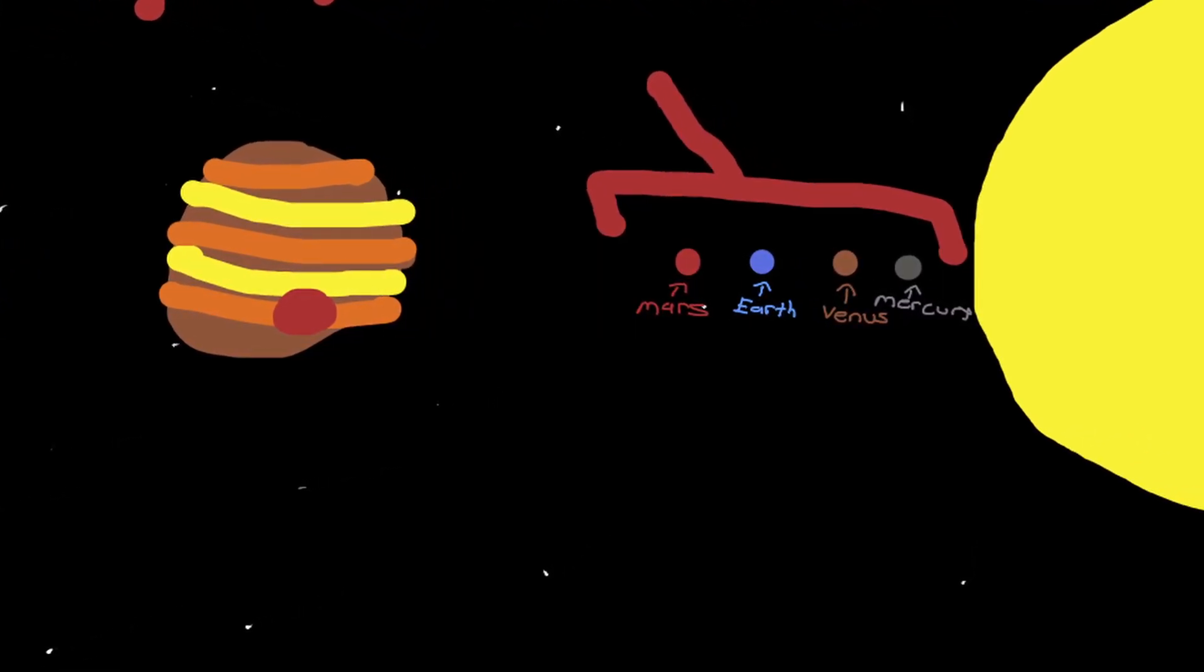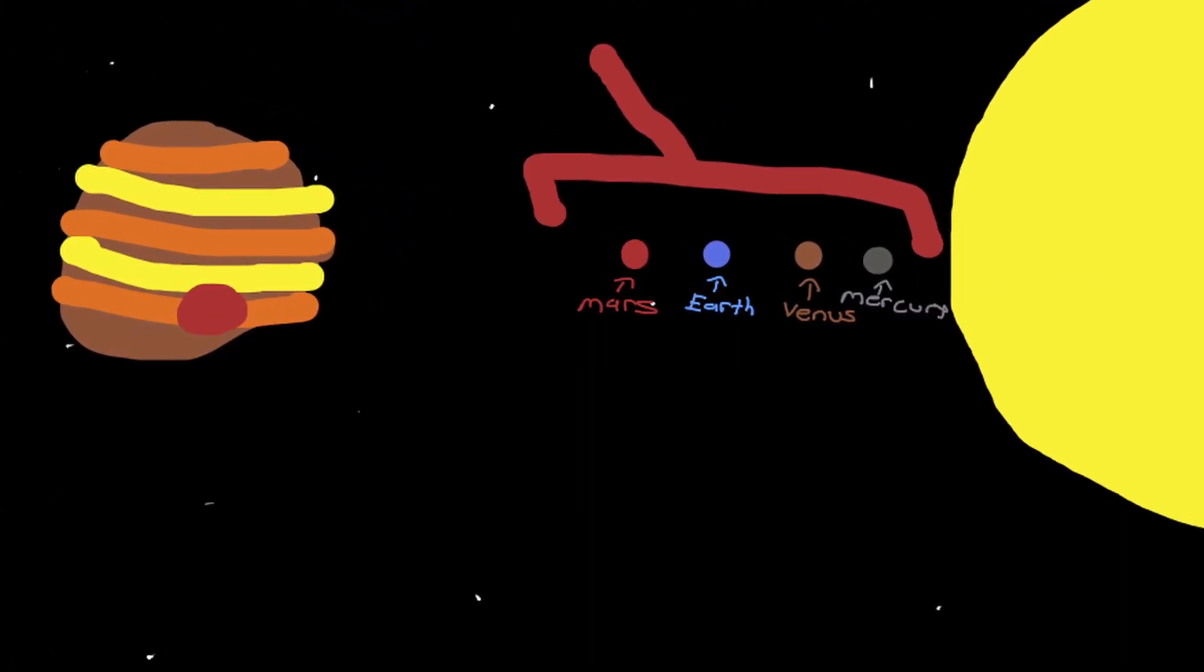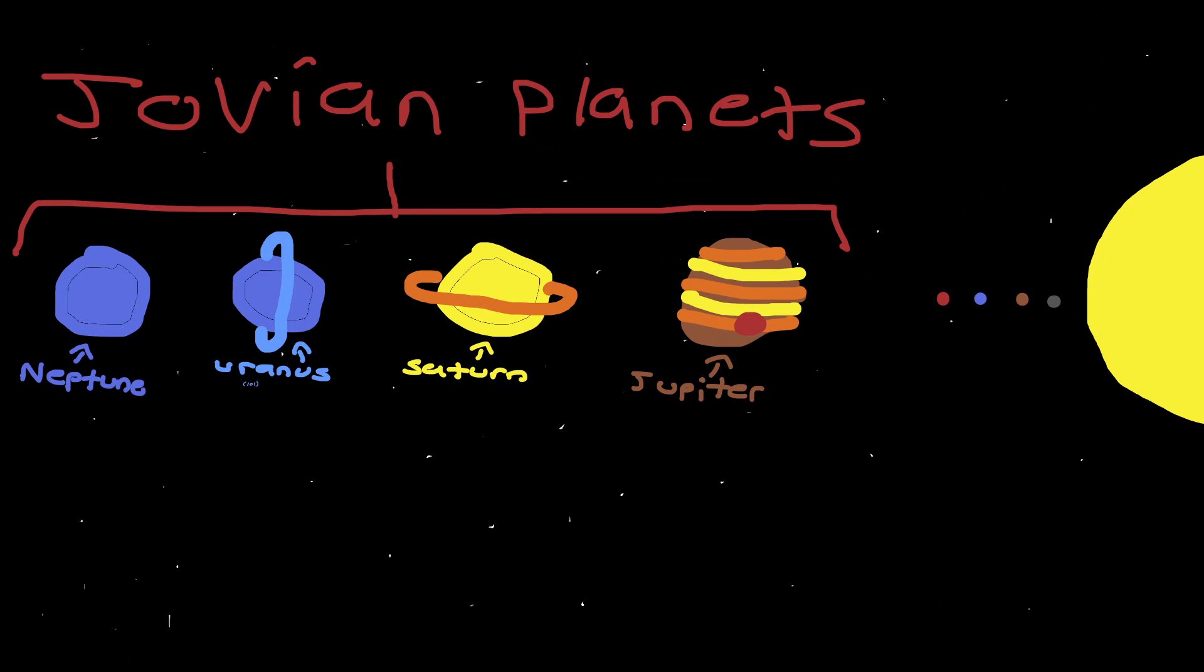The gas in this area would burn up, allowing these rocky planets to form. In the outer regions of the solar system, the Jovian planets, the gas planets, would form, as the gas would not evaporate.